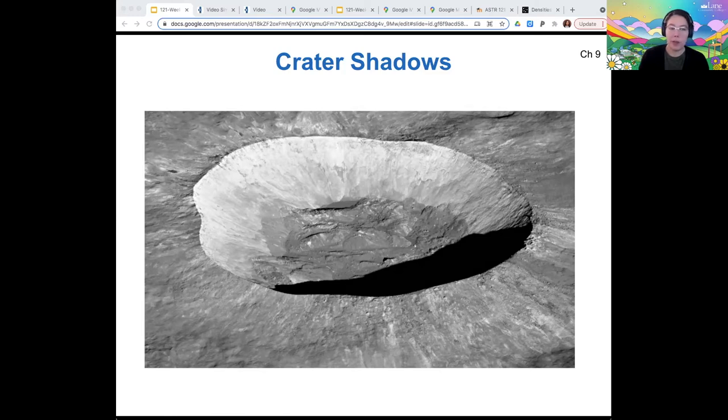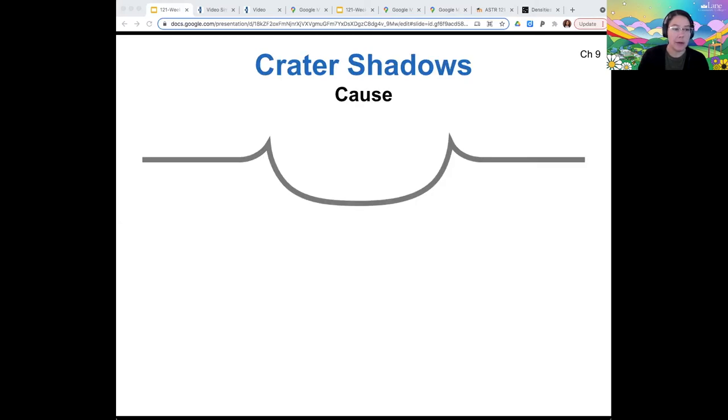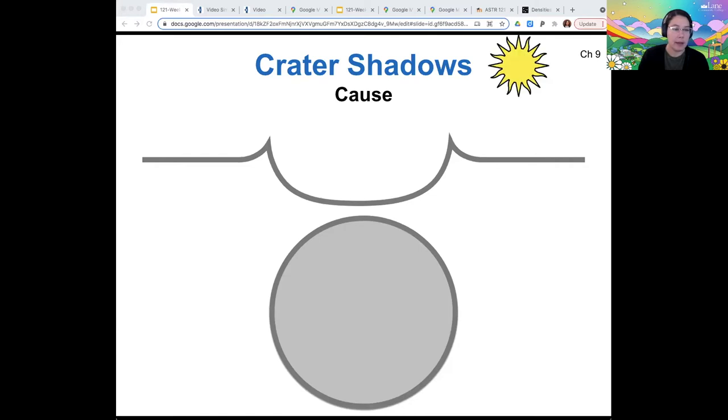So we can figure out some things about the crater based on the shadows. So if we think about the crater rims and then the floor of the crater, and then let's just draw this circle as if we're looking down from above. So this is the crater floor as seen from above. Then imagine we have the sun. It's at some angle above the horizon and it's shining onto the crater. Well, you can draw a line from the rim to the center of the sun, and wherever that line intersects the floor of the crater, that's going to be the shadowed region.